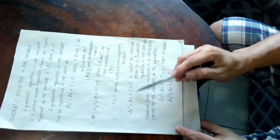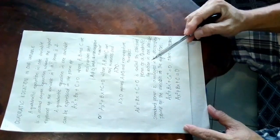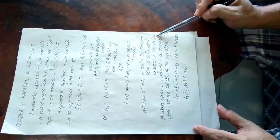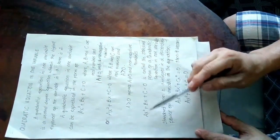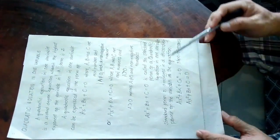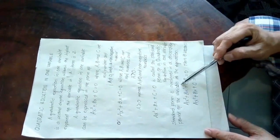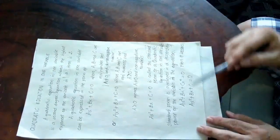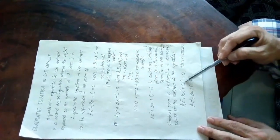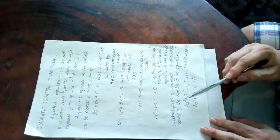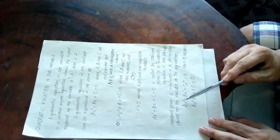Ax squared plus Bx plus C equals 0 is called the standard form of a quadratic equation in one variable. One variable because we have only one variable, which is x. The standard form is arranged in descending power of the variable. We can write it as Ax squared plus Bx raised to 1 plus Cx raised to 0 equals 0, with exponents written in descending order.